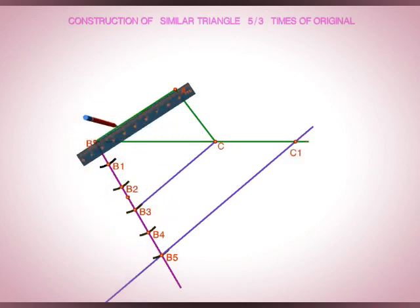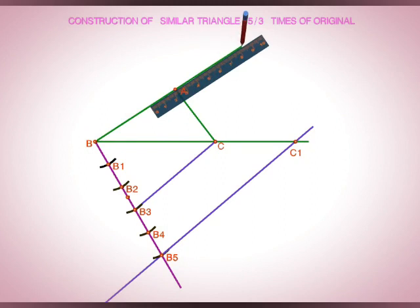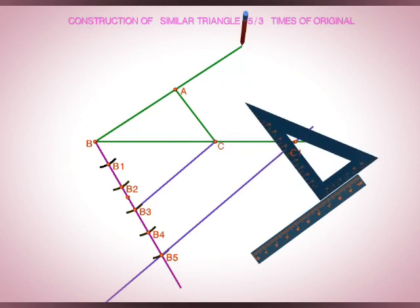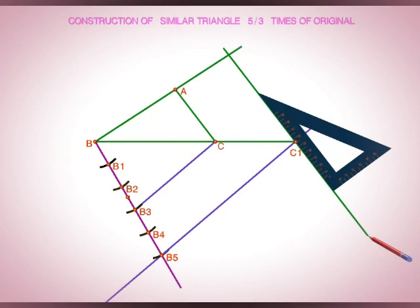Now extend BA also to some extent and draw a parallel line to AC through C1 which intersects BA extended line at A1.